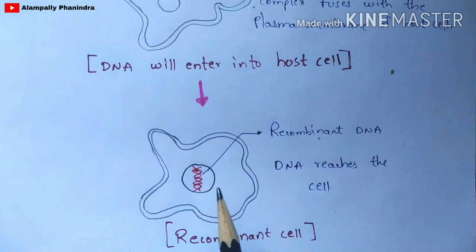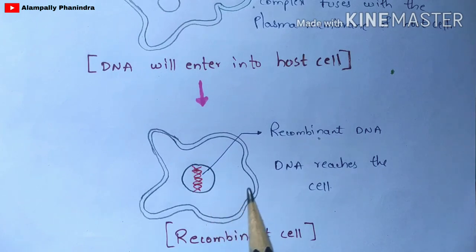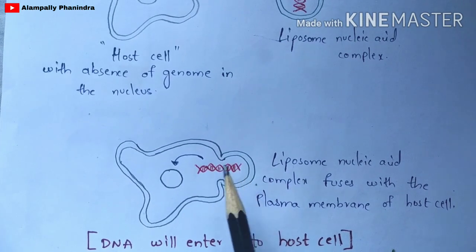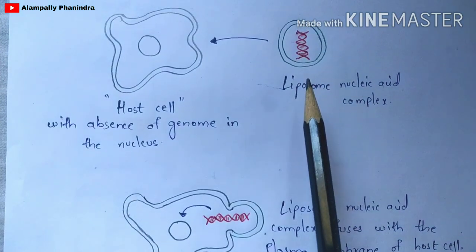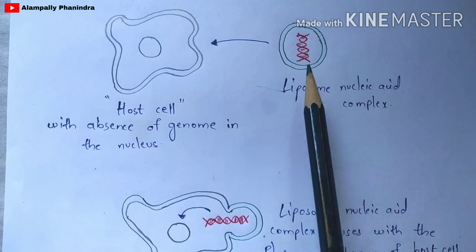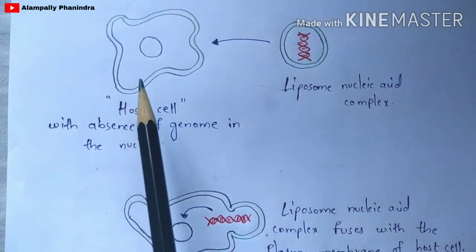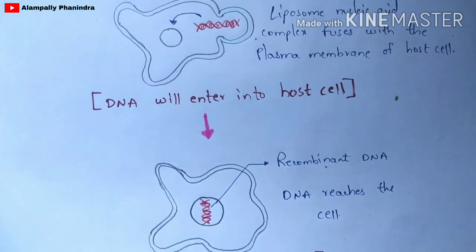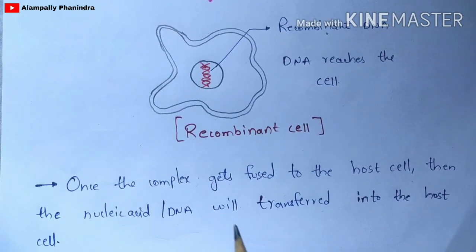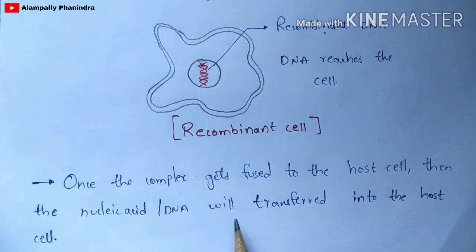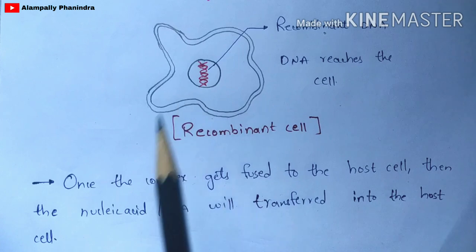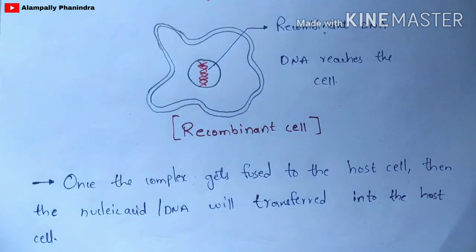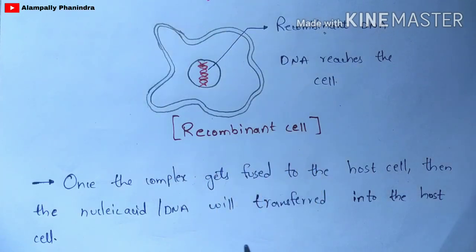The cell is called a recombinant cell because it consists of recombinant DNA, and the cell has been modified through a gene transfer technique. In gene transfer, genetic material is transferred from one cell to another — here, from the liposome into the host cell. Once the complex fuses with the host cell, the nucleic acid is transferred into that host cell.